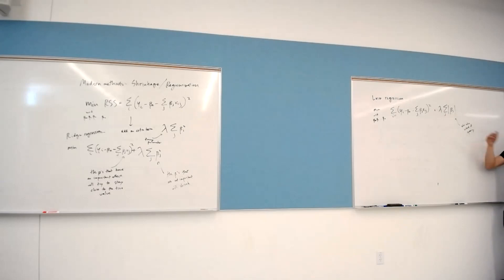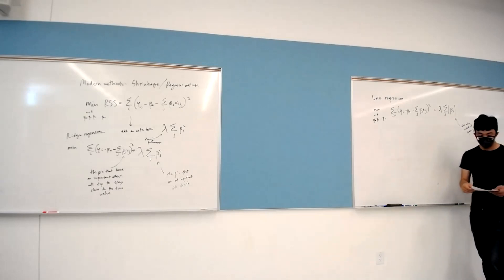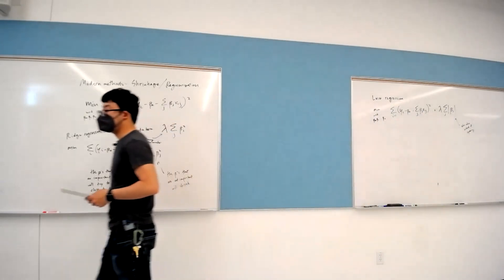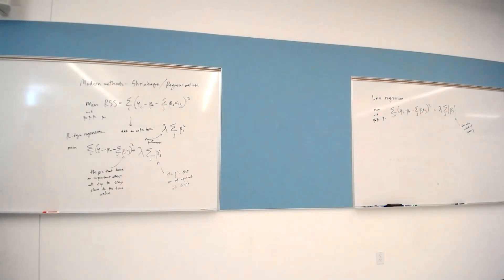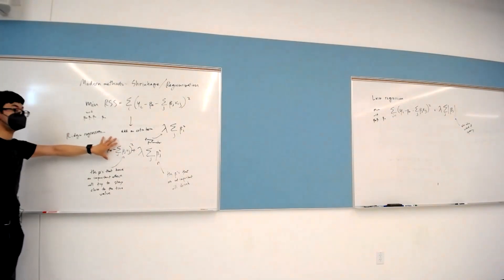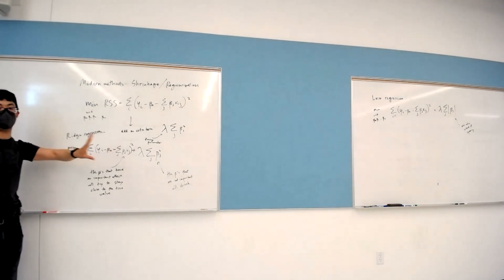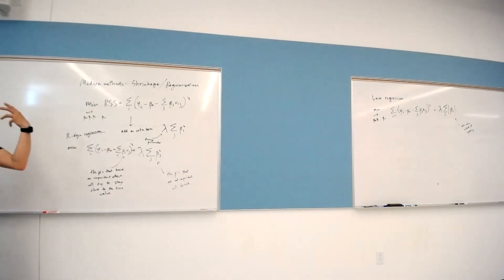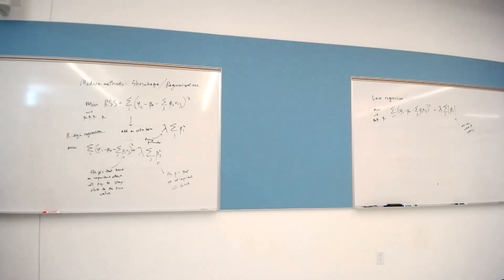How should we select the tuning parameter? This will be a common theme through the rest of the class — anytime I ask this question the answer is probably cross-validation. I can choose a bunch of different lambdas, do out-of-sample validation, and figure out which model gives me the best predictions out of sample. Then I use that lambda to represent the results I want out of my regression.